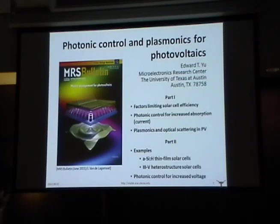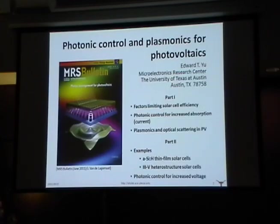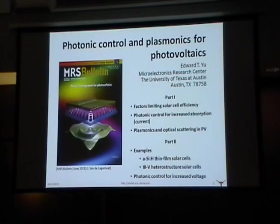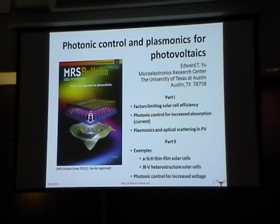What we want to do is talk in detail about the various elements that go into this and how you can use them. The talk will be in two parts. In the first part, I'll briefly discuss some of the factors that limit solar cell efficiency — we heard about some of this in Matt Beard's talk this morning. Then I'll talk about how you can use the idea of controlling photon propagation to increase optical absorption and photocurrent generation, and we'll go into the background that underlies plasmonics and optical scattering in photovoltaics.